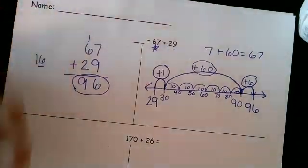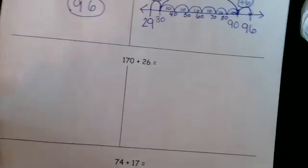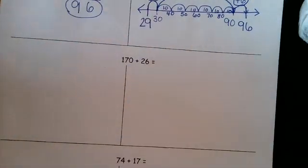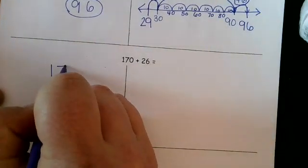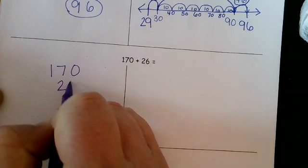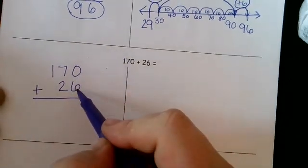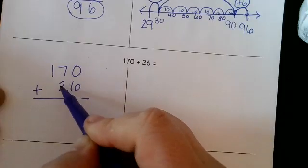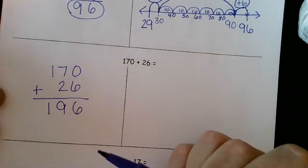I'm going to go through one more just to talk through it and give a little more verbiage in response to what they might do. Here, 170 plus 26. This is a trickier stack because they don't always put their tens with the tens and ones with the ones. 0 plus 6 is just 6. 7 plus 2 is 9. 1 plus nothing is 1. So I have 196.